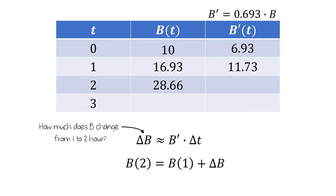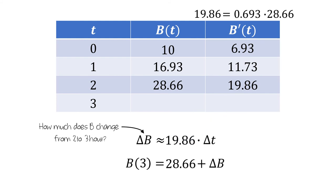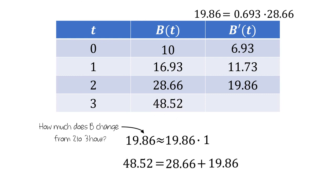And we could repeat this process again. To compute the number of bacteria at t equals three hours, we'd need the number of bacteria at t equals two hours, which is 28.66, and how much b changes from t equals two to three hours. We can use 28.66 in the differential equation to get b prime is 19.86 bacteria per hour at hour two. From hour two to hour three, the amount of change in time is one hour, so the number of bacteria increased by approximately 19.86 between hours two and three. We can add this to the 28.66 that were already present to get a total of 48.52 bacteria present at t equals three hours. So this is how we can use Euler's method to approximate the number of bacteria present three hours after being introduced.